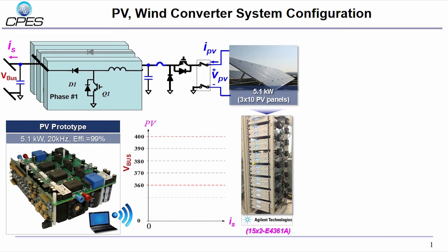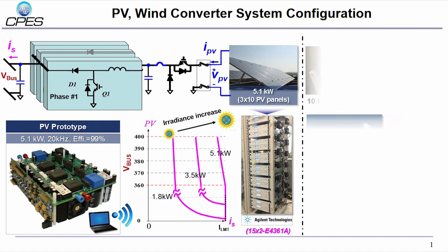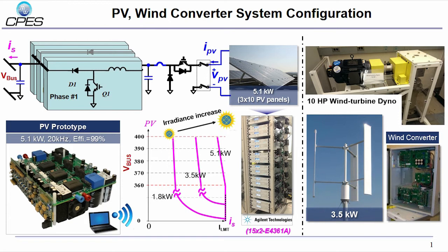The second component is solar energy. The PV prototype is a 5.1kW boost converter with 20kHz switching frequency and the efficiency is over 99%. The major function of PV converter is tracking maximum power point of the PV energy source. The static VI characteristics is the series of constant power lines. The wind system is shown in the right-hand side and its control in VI curves is similar to PV energy.